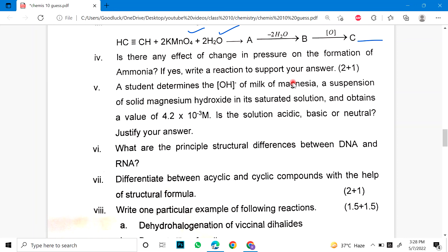Number 4. Is there any effect of change in pressure on the formation of ammonia? If yes, write a reaction to support your answer. Number 5. A student determines the OH negative of milk of magnesia. A suspension of solid magnesium hydroxide is in its saturated solution and obtain the value of this. Number 6. Is the solution acidic, basic or neutral? Justify your answer.